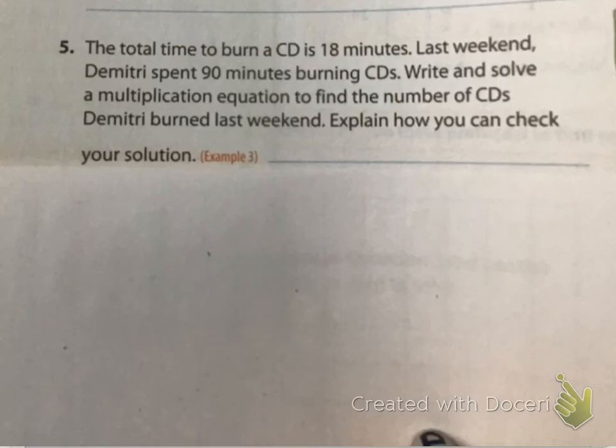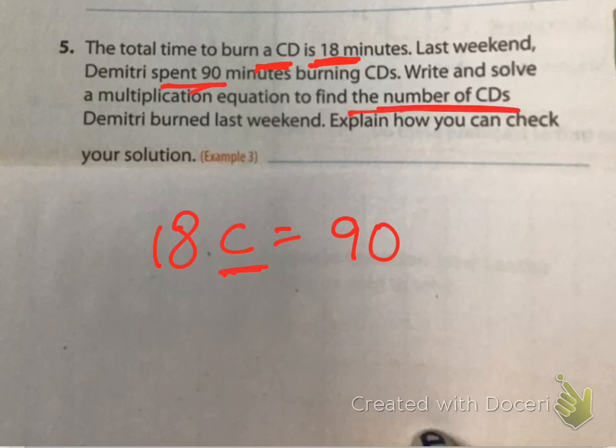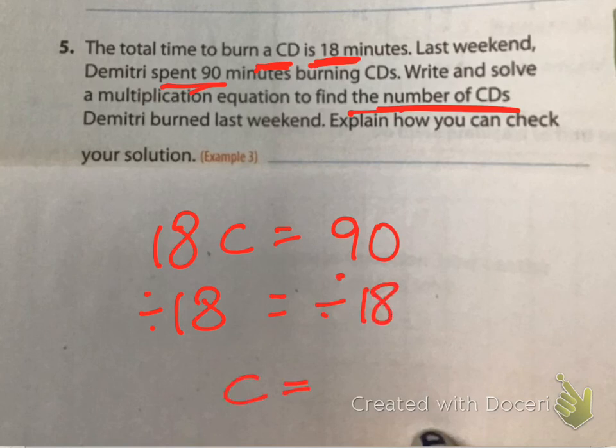Elsie, what did you get for this one? What was your equation? 18C equals 90. Great job because it takes 18 minutes for one CD. And he spent 90 minutes total. So, how many CDs are unknown? What are we going to be dividing? Am I going to be dividing each side by 90 or each side by 18? Alinza, each side by 90 or each side by 18? 18. Divided by 18. And C is equal to... Elsie? 5. C is equal to 5.